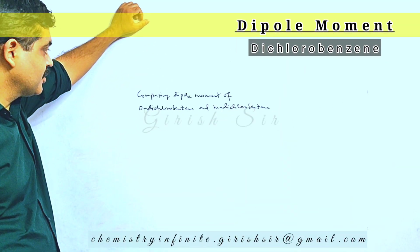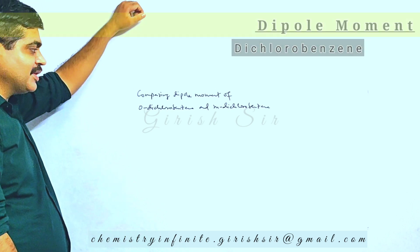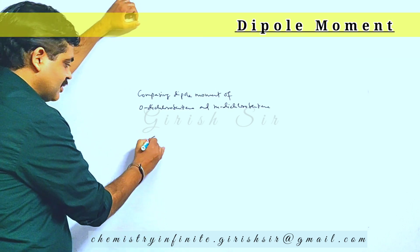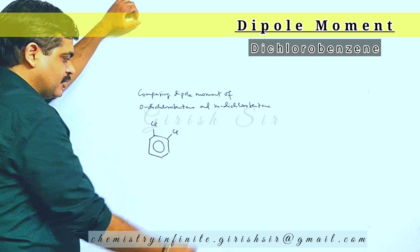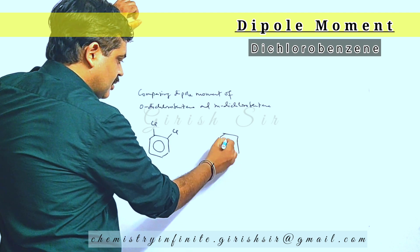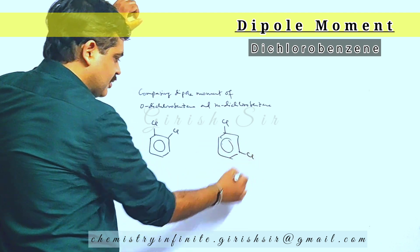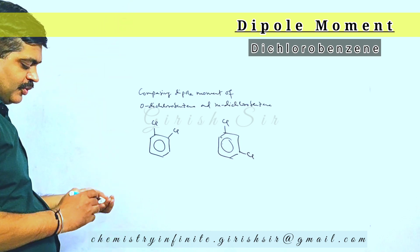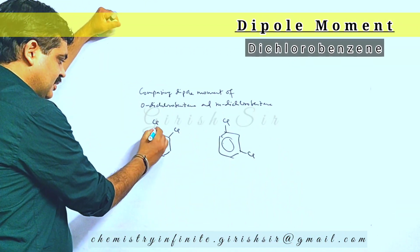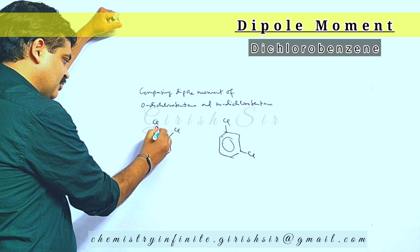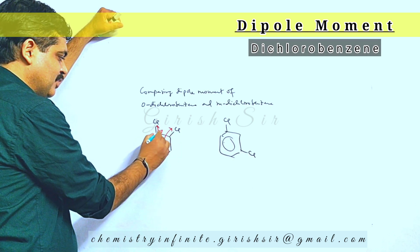Okay students, let's see this question. We have to compare dipole moment of ortho-dichlorobenzene and meta-dichlorobenzene. These are the compounds. Now both compounds contain two polar bonds. Suppose this bond is having a dipole moment of mu and this bond is also having a dipole moment mu.